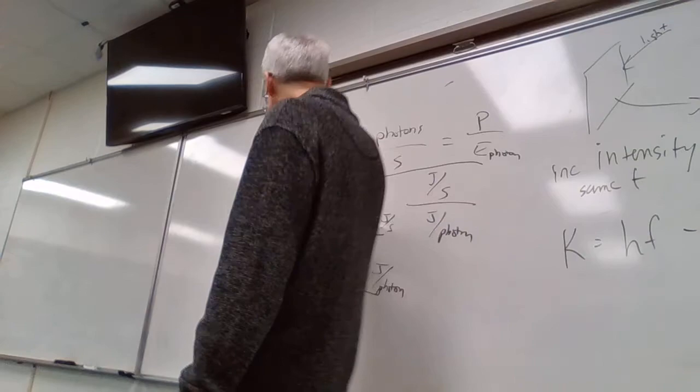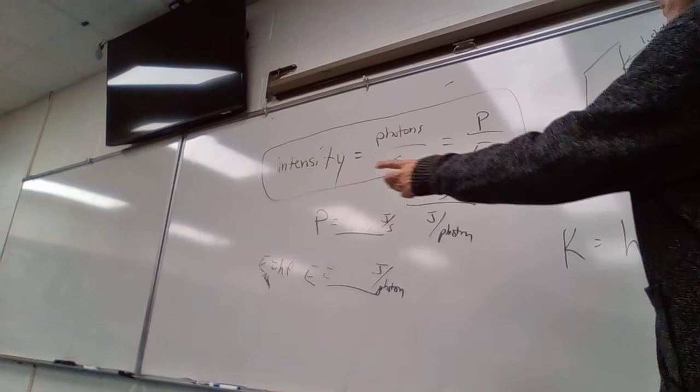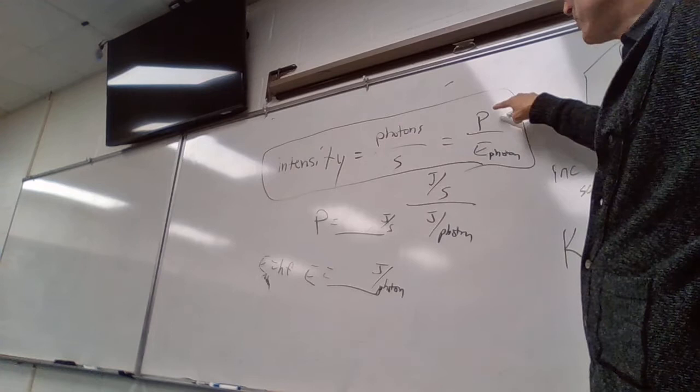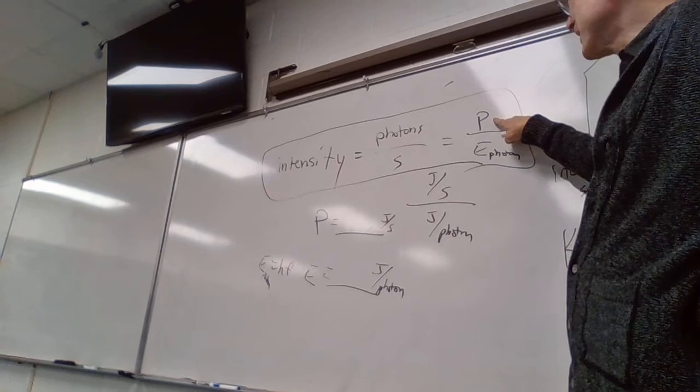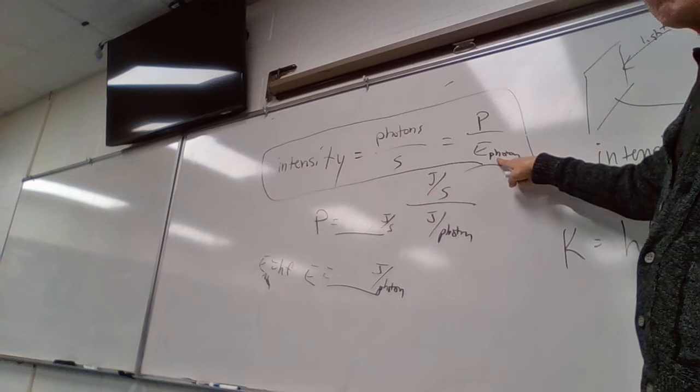The key thing to remember: intensity equals power divided by energy. Not on your equation sheet — you need to remember it. Brightness means photons per second. You can calculate it as power (joules per second for the whole beam) divided by energy of a single photon (hf). Everything I just talked about flows from this.